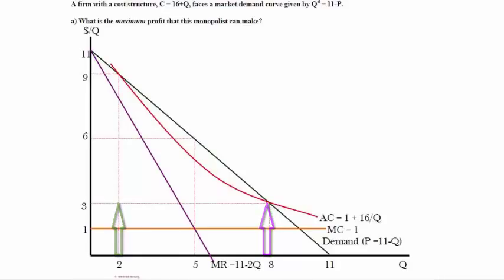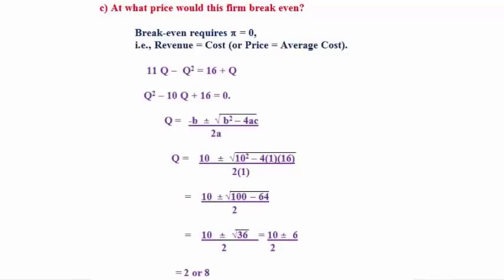Here is how we determine those break-even points. Break-even requires zero profit or revenue equal cost or price equal average cost. 11 minus Q times Q is 11Q minus Q squared, so revenue equals 16 plus Q. If we rewrite that equation for a positive Q squared term, we get Q squared minus 10Q plus 16 equals zero. The quadratic formula Q equals minus B plus or minus the square root of B squared minus 4AC all over 2A. Plugging in these values into the equation, we come up with Q equals 2 or Q equals 8.